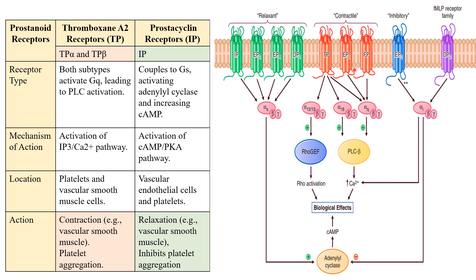So to summarize all the receptors: IP (prostacyclin), EP2, EP4, and DP1 receptors couple to the Gs protein and cause relaxation. EP1, FP, and TP receptors couple to the Gq protein and cause smooth muscle contraction. EP3 and DP2 receptors couple to the Gi protein. I hope that was easy to understand — let's move on.